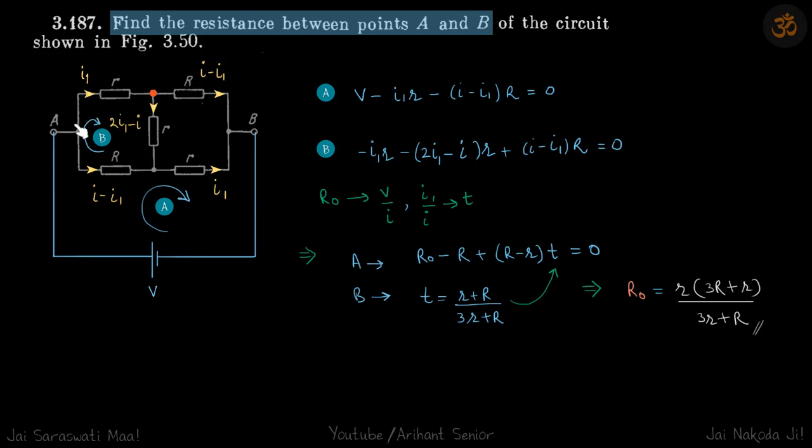Which means current leaving in this branch is same as current coming from this branch. And current escaping in this branch is same as current arriving from this branch. So this is I1, this is also I1. And if this is I minus I1, then this is also I minus I1. So if I1 is arriving here and I minus I1 is leaving, then the current leaving in this branch is arriving minus leaving, which is I1 minus I minus I1, which is 2I1 minus I. So now we have current in all the branches.